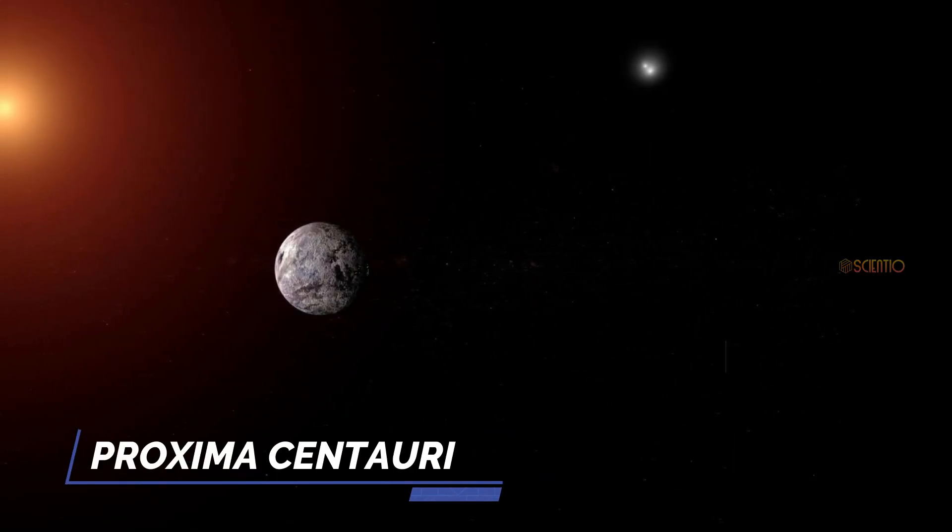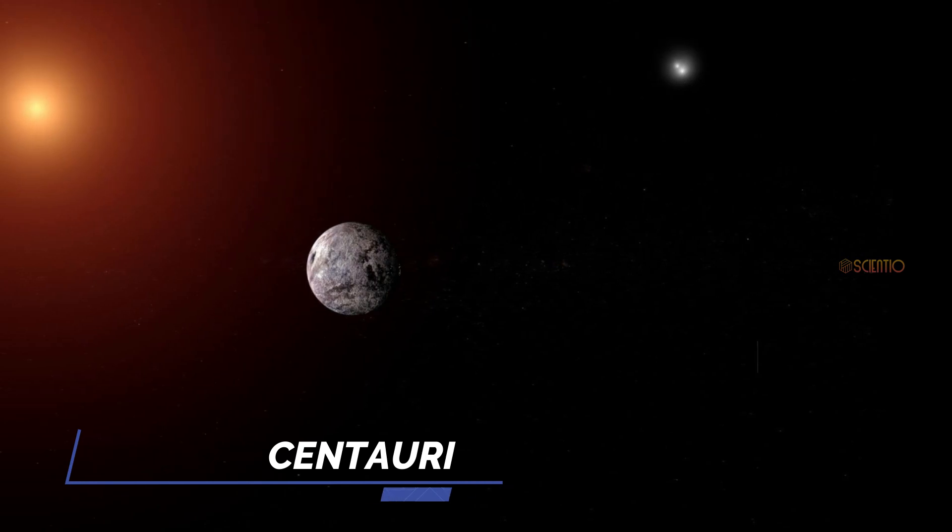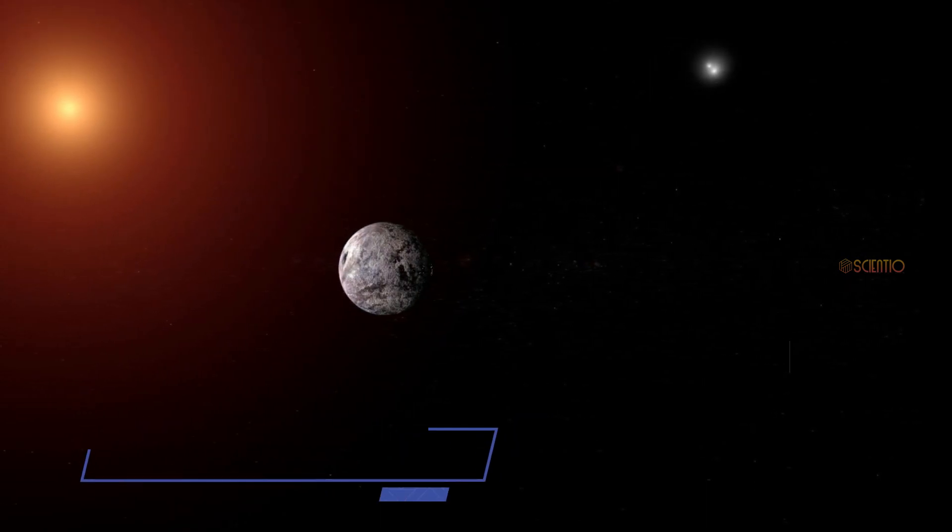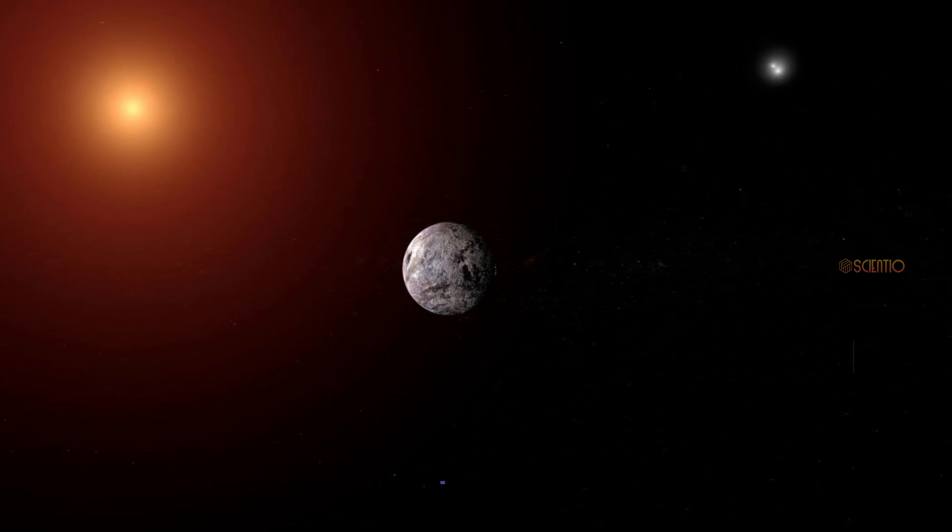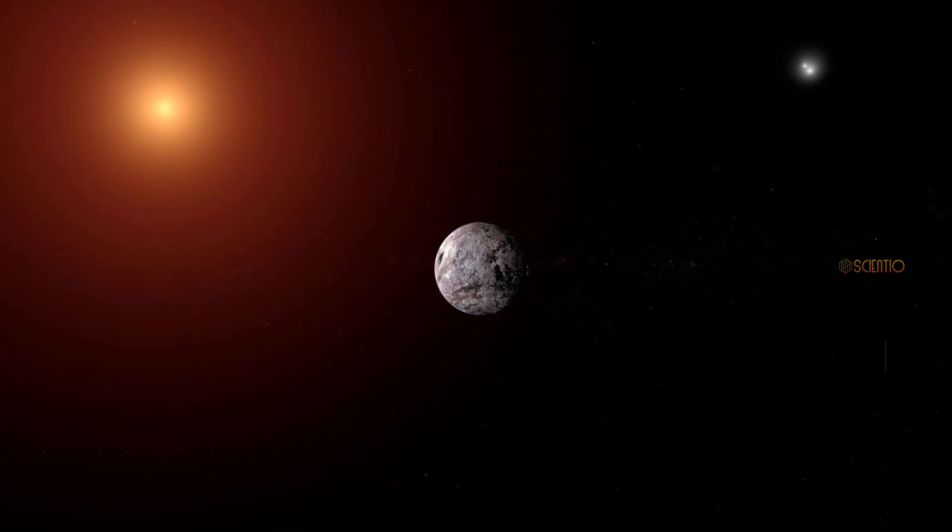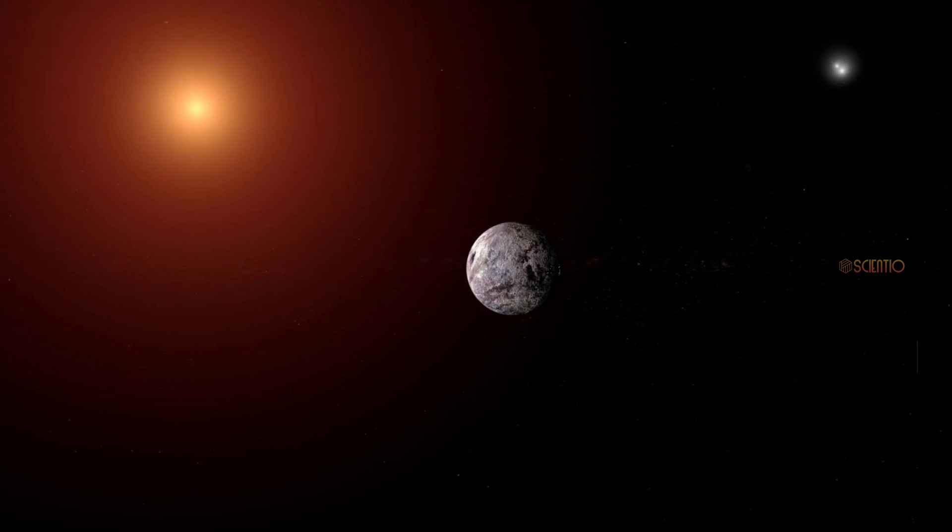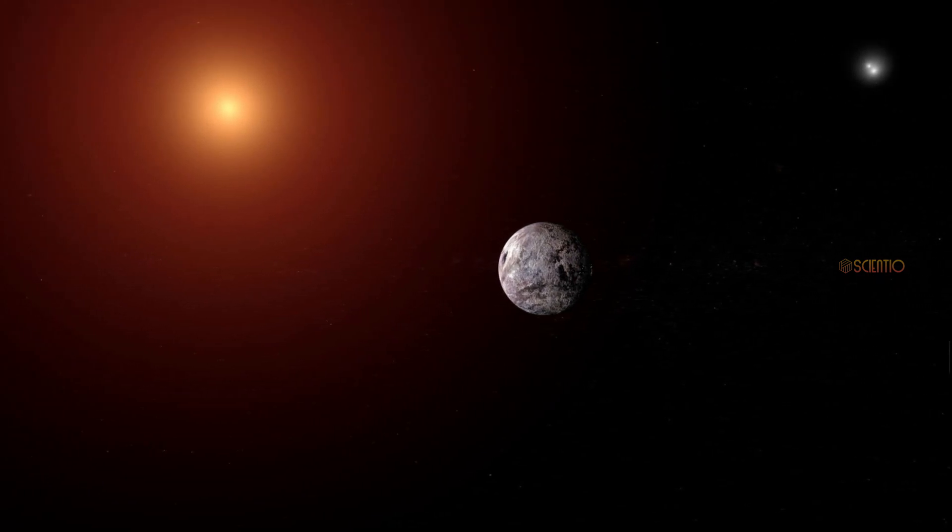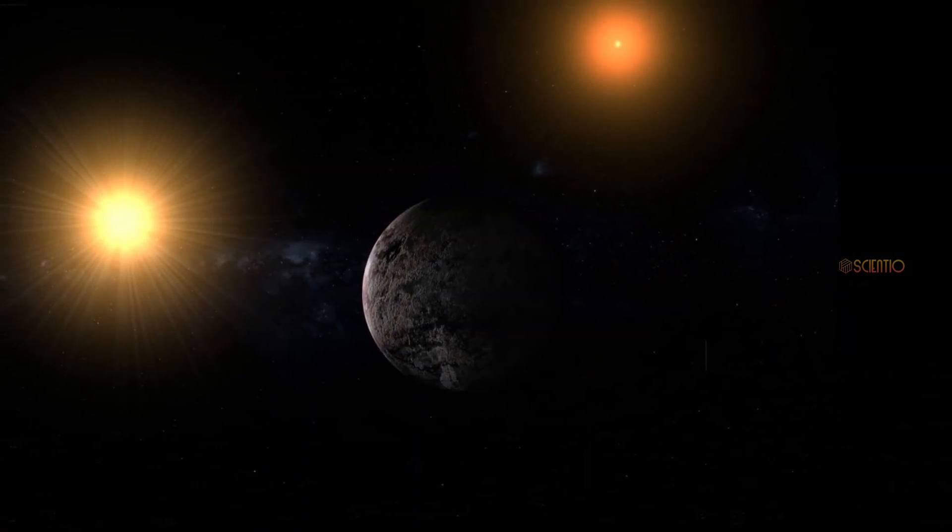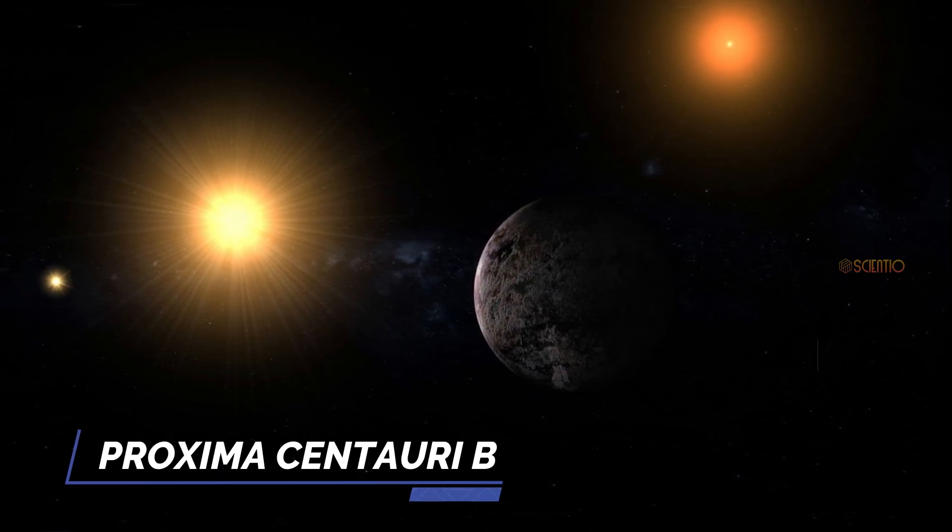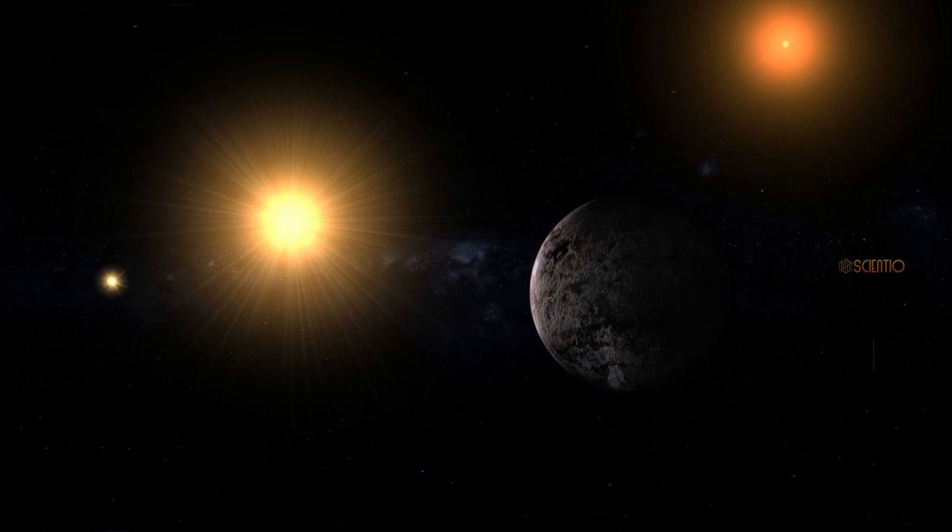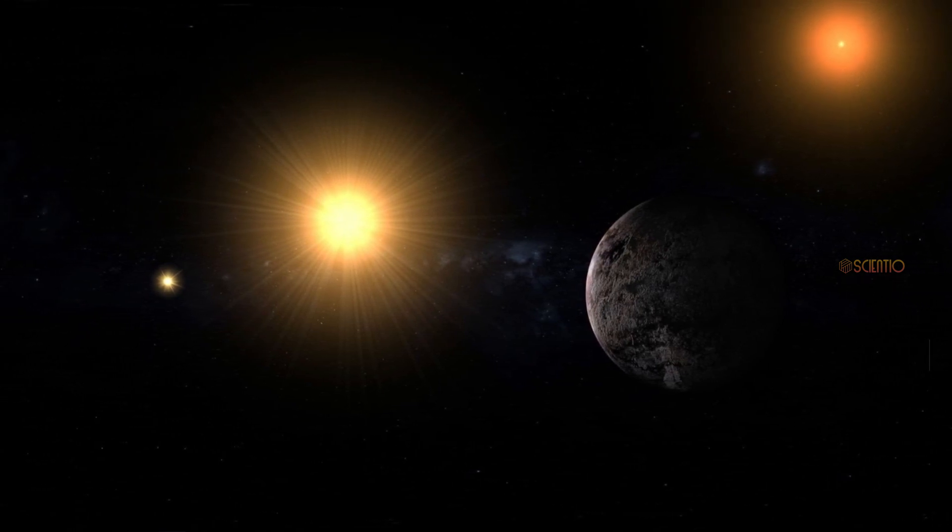Proxima Centauri. This is the closest star to our solar system, located about 4.24 light-years away. If we were traveling at the speed of light, it would take us 4.24 years to reach Proxima Centauri. The star is orbited by at least one known exoplanet, Proxima Centauri b, which is located in the habitable zone and could potentially support life.